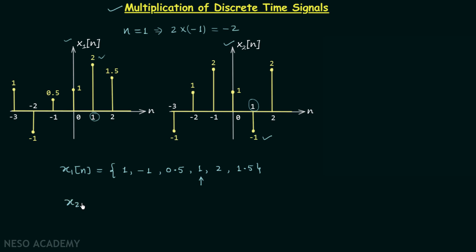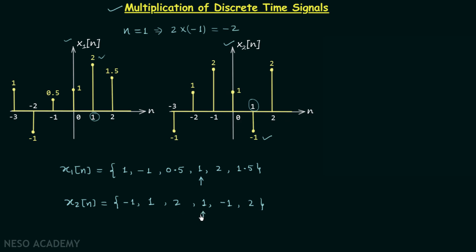Similarly, we will write our second signal x2n. It is equal to minus 1, 1, 2, 1, minus 1, 2, minus 1, 1, 2, 1, minus 1, and finally 2. x2n is equal to 1 when n is equal to 0, so we will put one arrow mark here.